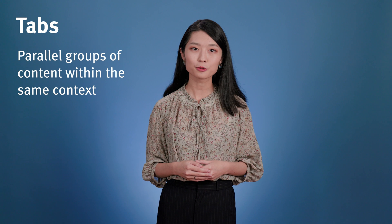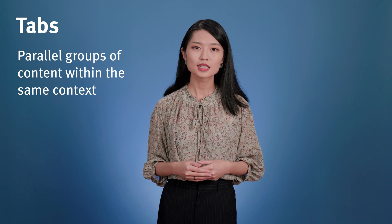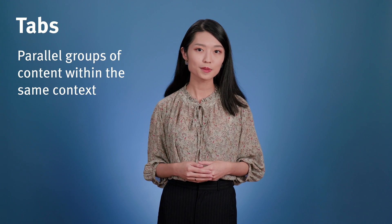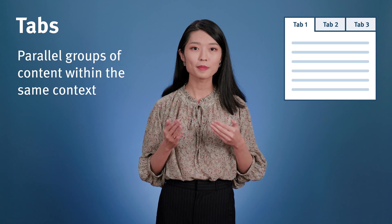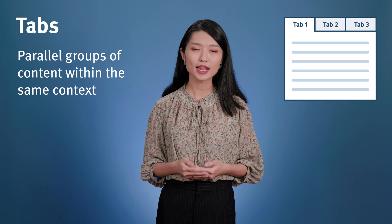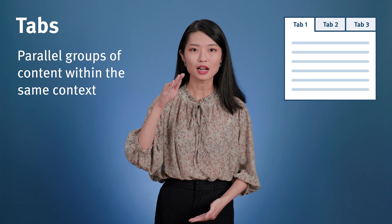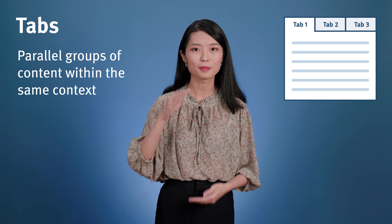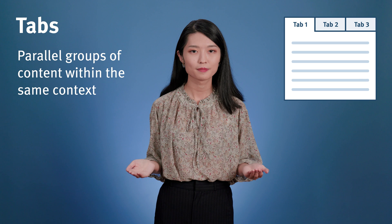Let's first start with tabs. Tabs display parallel groups of content within the same context. Similar to tab-binder dividers in the physical world, they work best when there are only a few. Because tabs are laid out horizontally, they can accommodate longer content chunks on the page without affecting content in other tabs.